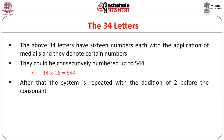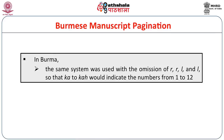The 34 letters with 16 numbers each through application of medials could be consecutively numbered up to 544. After that, the system is repeated with addition of 2 before the consonant — 2-Ka represents 545 and so on. In Burma, manuscript writers used almost a similar pattern of pagination, with the same system but with the omission of Ra, Ra, La and La, so that Ka to Ka would indicate numbers from 1 to 12.